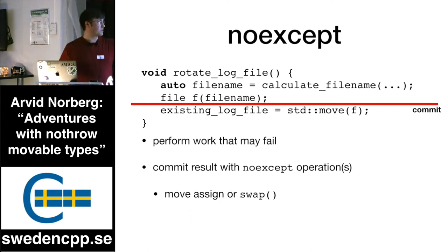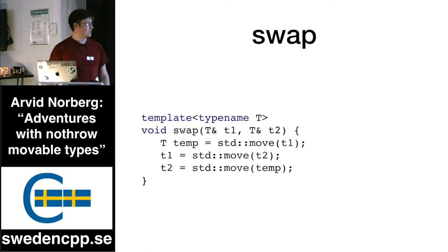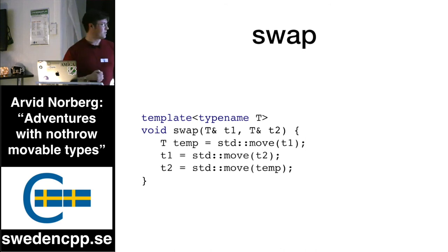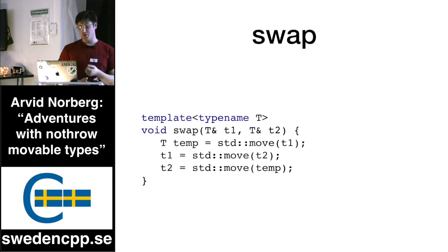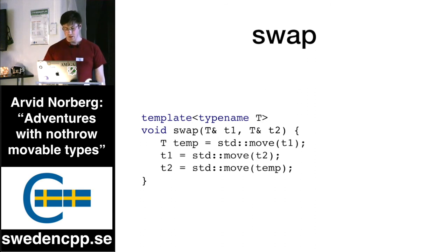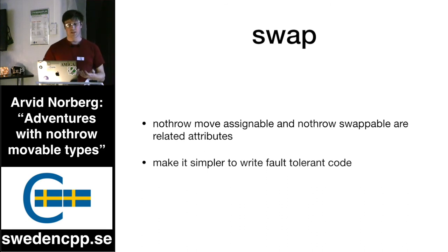Another common variant is to use swap instead of move assign. If you look at how swap is implemented, you can imagine it looks like: move one object into a temp, move from the second into the first, move from temp into the second. If your move assignment is `noexcept`, then your swap will also be `noexcept`. So swap and move assign make it a lot easier to write fault-tolerant code, and those are interesting attributes as well.